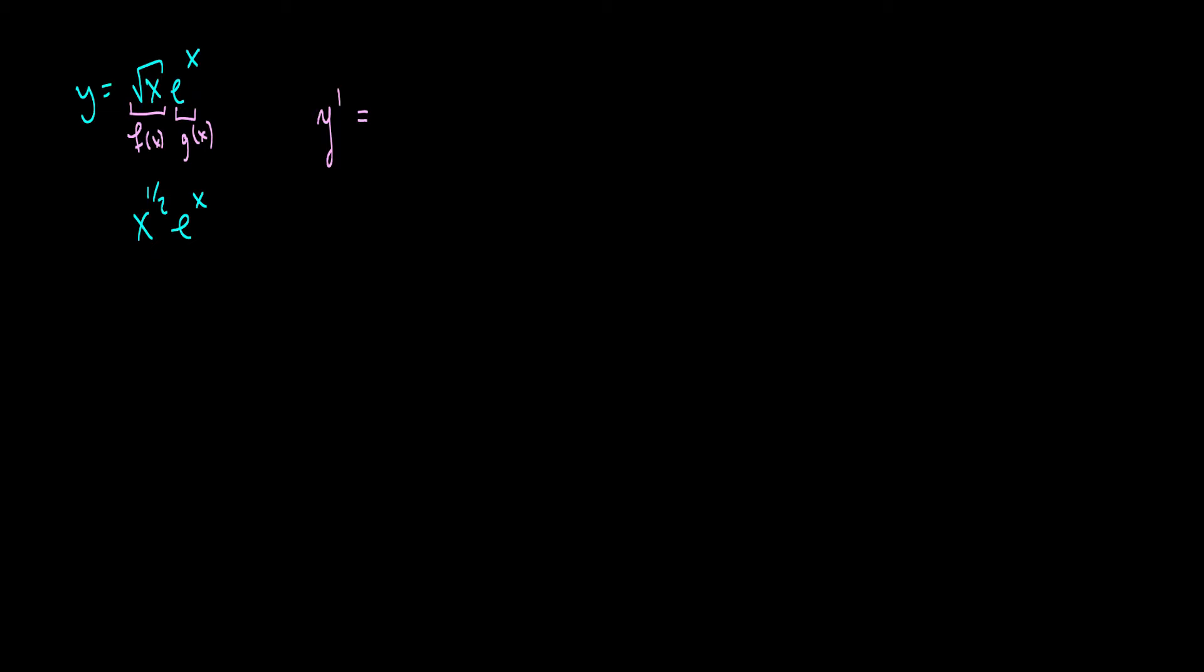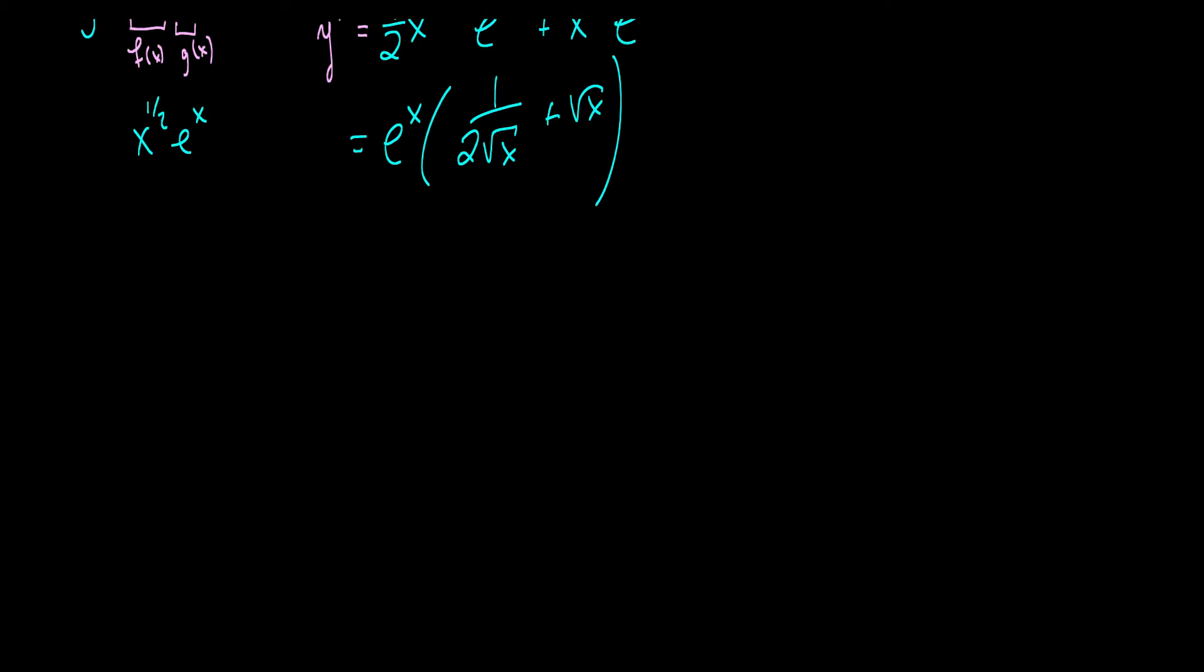So, the derivative of x to the 1 half is 1 half times x to the negative 1 half. Remember, you take the power down, it becomes the coefficient, you subtract 1 from it, multiplied by our g of x function, and then we add our f of x, which is x to the 1 half times the derivative of g of x, which is just e to the x. And we can factor out an e to the x again, and get 1 over 2 root x plus root x. And this looks a little bit nicer. It shows that you know what you're doing with your powers of fractions, but that's about it.